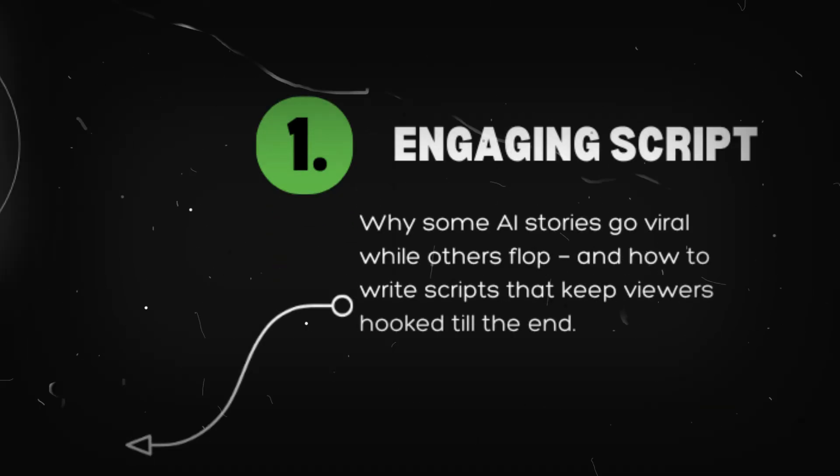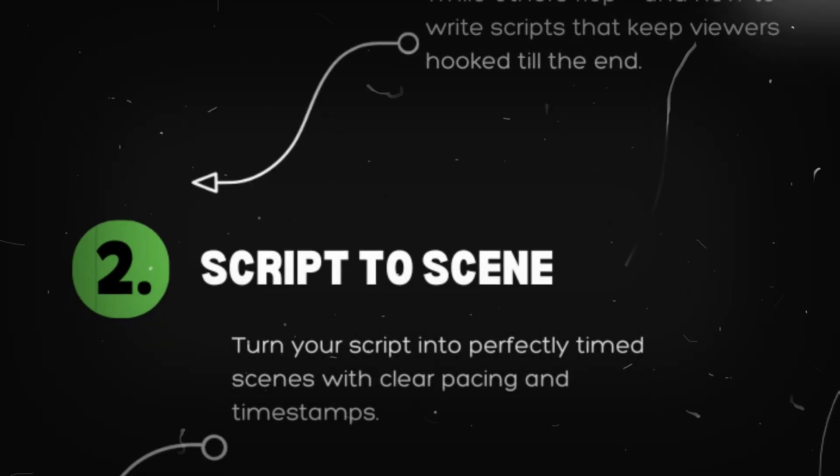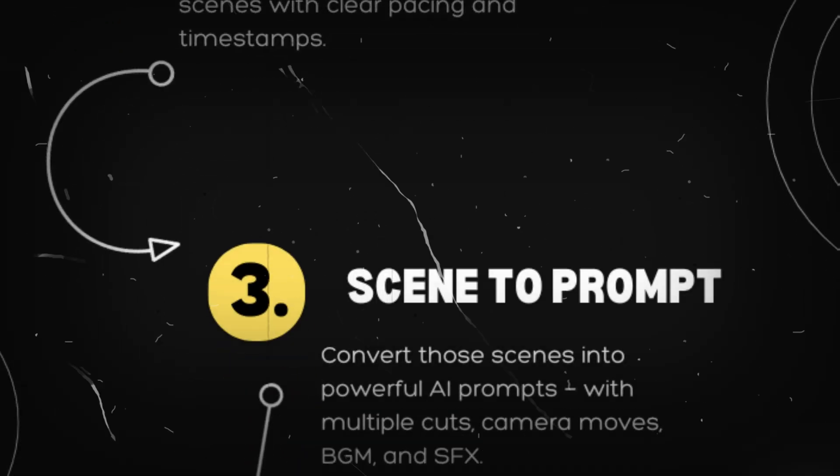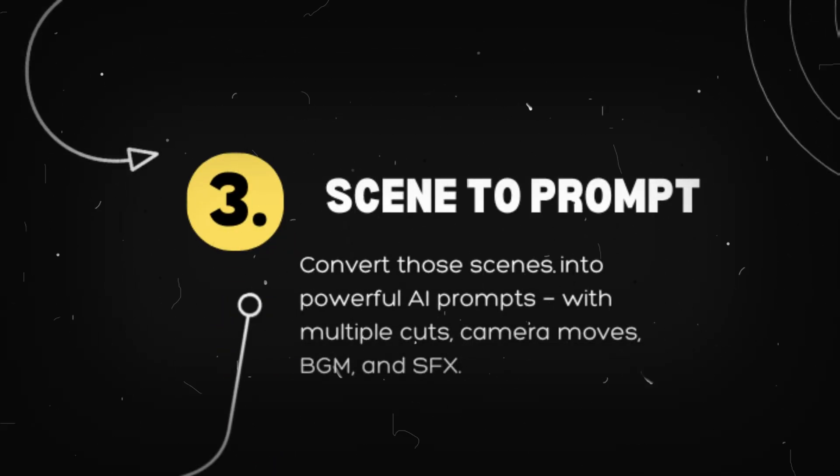Here's what you'll learn in this tutorial. Chapter 1: Why some AI stories go viral while others flop, and how to write scripts that keep viewers hooked till the end. Chapter 2: Turn your script into perfectly timed scenes with clear pacing and timestamps. Chapter 3: Convert those scenes into powerful AI prompts, with multiple cuts, camera moves, BGM, and SFX.